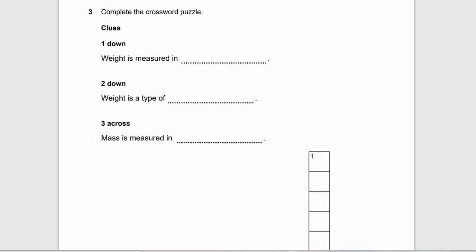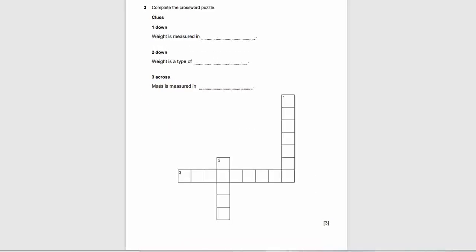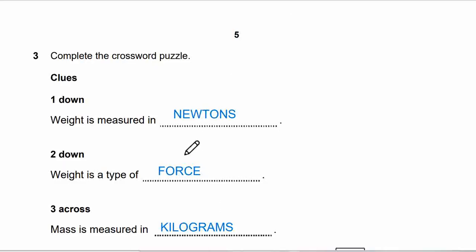Now let's move to question 3 — it's a crossword puzzle. Clues: one down, weight is measured in — Newtons; two down, weight is a type of — force; three across, mass is measured in — kilograms. That's our puzzle done, so this is the answer for number 3.